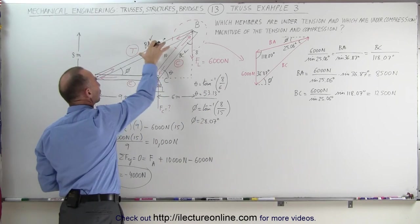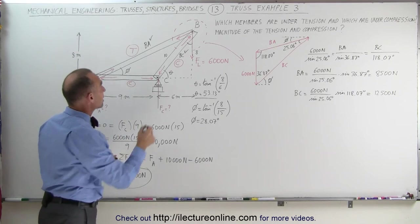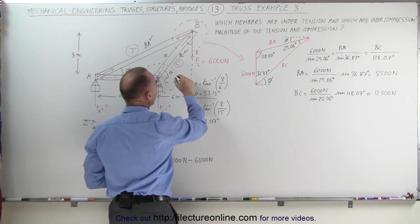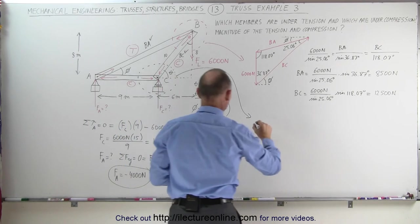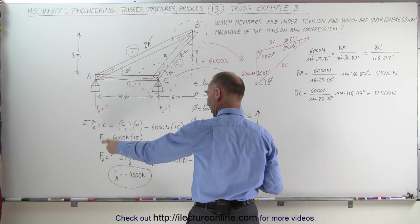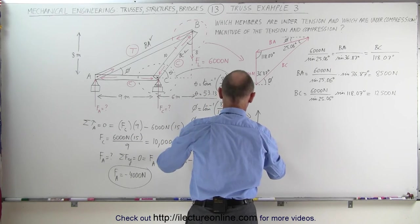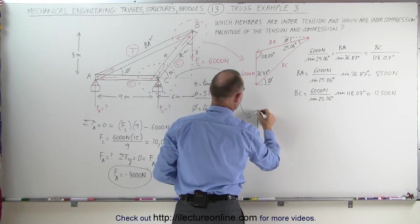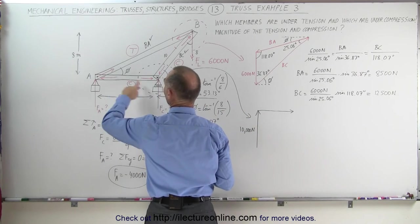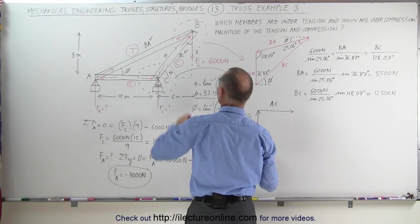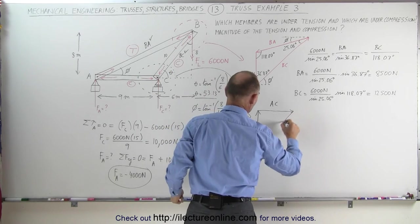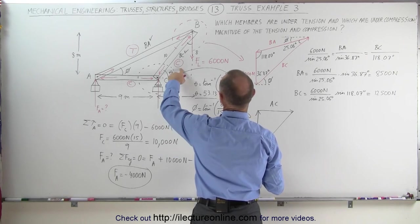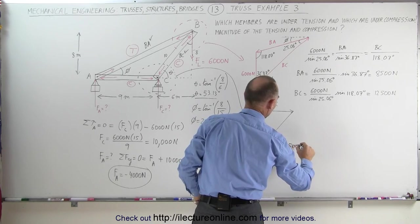We have one member left to find. Let's take a look at the triangle caused by the three forces at joint C. We have a force coming directly upward — that is F sub C, which we found to be 10,000 Newtons. Then we have the force due to compression on AC, and the force from B to C, which is BC. We already know BC equals 12,500 Newtons.